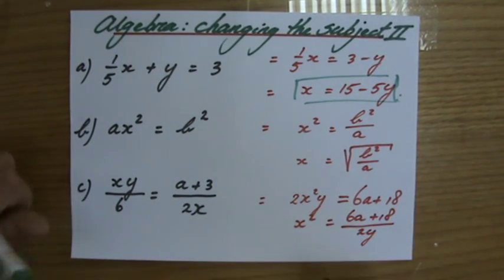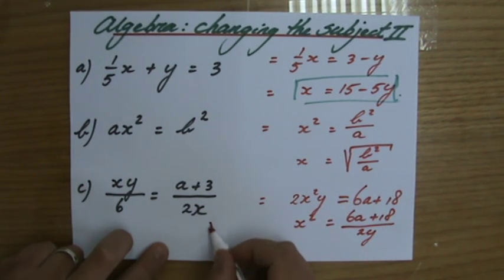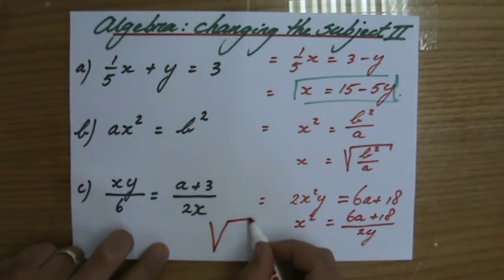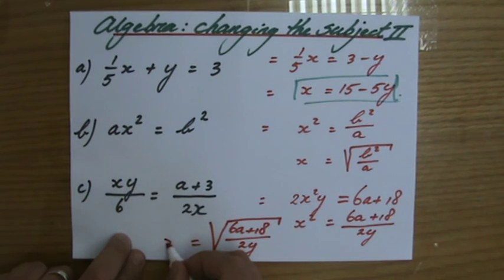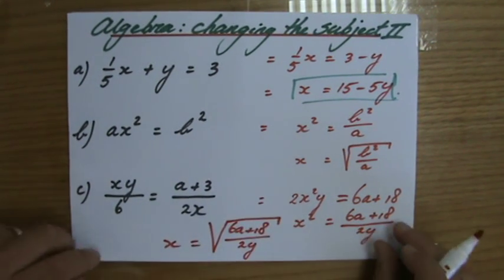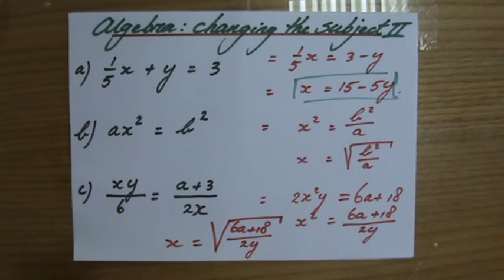And then again, that square, how do I get rid of it? By taking the square root. My final answer is the square root of 6a plus 18 over 2y. Make sure it's very clear that the entire fraction is inside that square root sign, not just the numerator or anything like that.